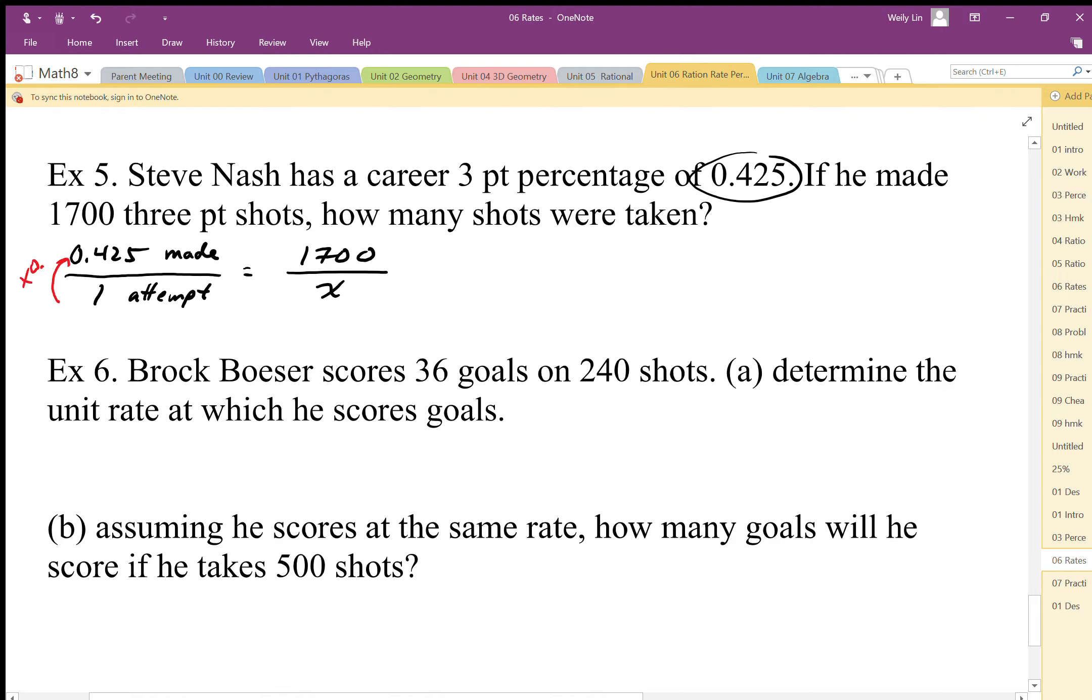From bottom to top it's times by 0.425. To go in the opposite direction, I'm going to divide by that same rate, the same multiplier, now going the opposite direction. Dividing 1,700 by 0.425 gives us 4,000 shot attempts. The made to attempts ratio is 0.425 to 1, so the shots made to shots attempted is 1,700 to 4,000 ratio.